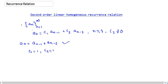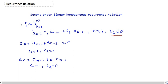Now if I write a_n equals a_{n-1}, comparing with our equation we get c1 equals 1 but c2 equals 0 — it can be written as 0 times a_{n-2}. So is this a second order linear homogeneous equation? Obviously not, because we have the condition that c2 must be non-zero. So this is not an example of a second order linear homogeneous equation.